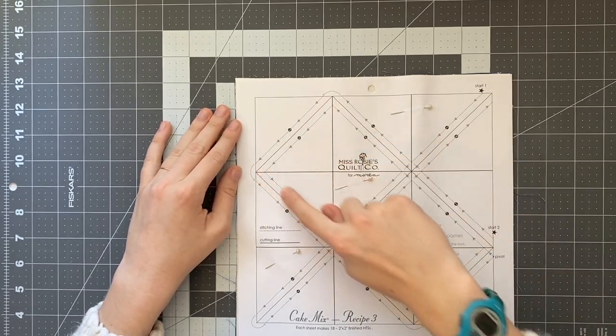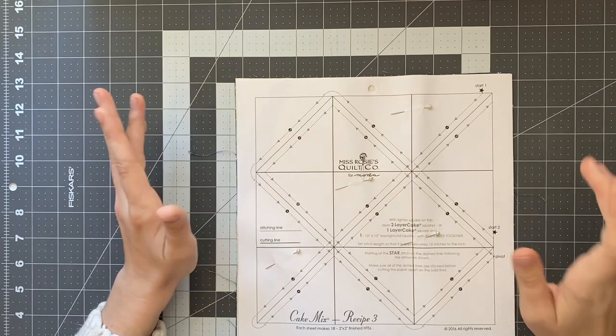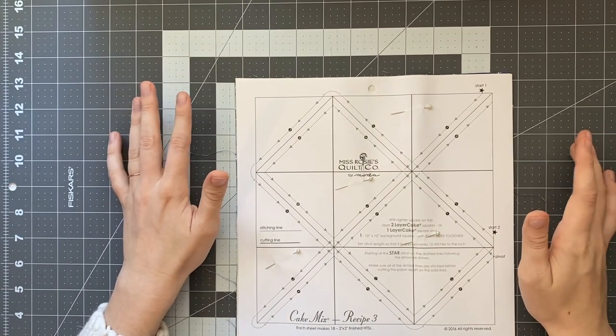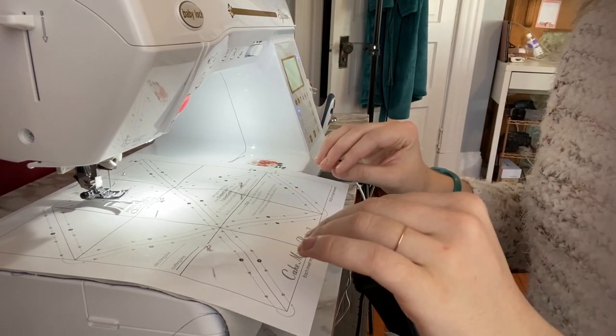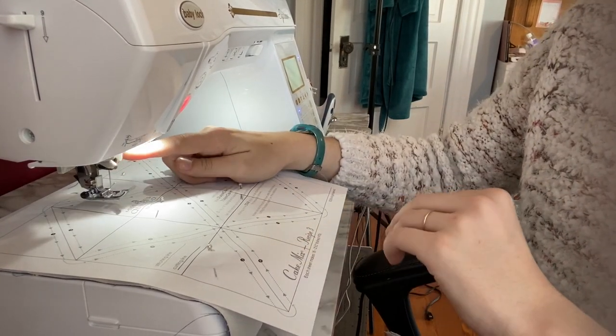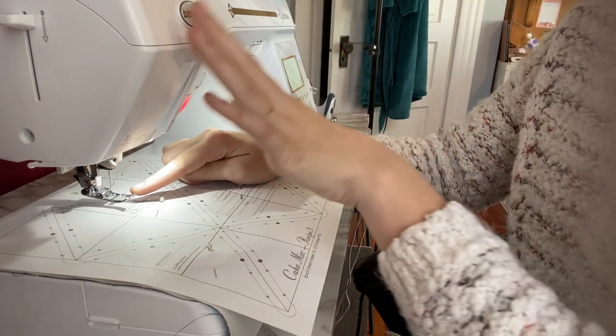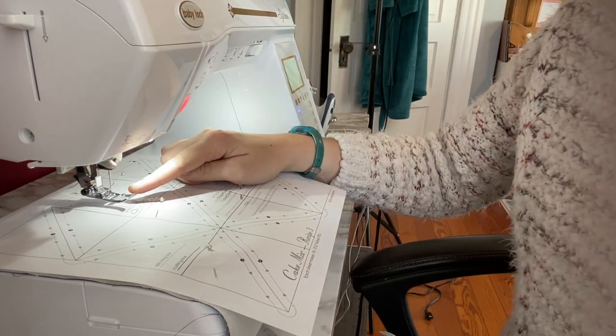okay so before we get sewing I just want to show you guys a couple of things that I have here on my machine I just have a standard foot my machine is a baby lock soprano this is just the standard J foot that comes with the machine I'm just going to be sewing with my needle in the center